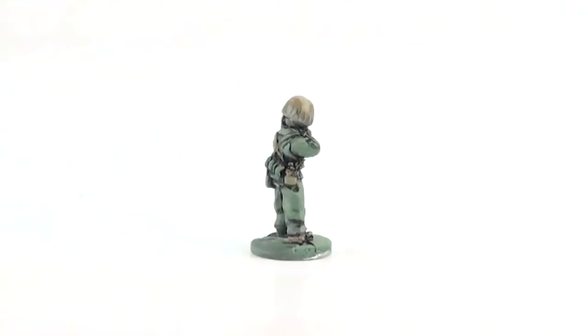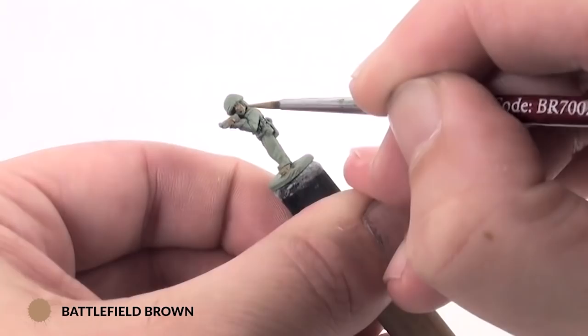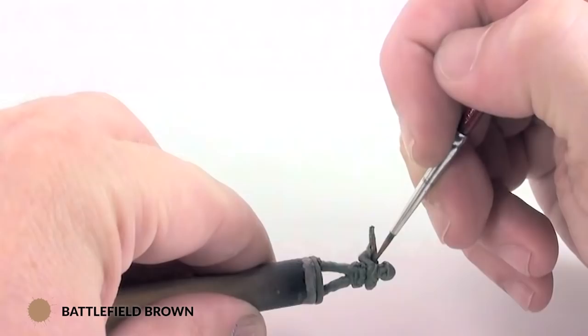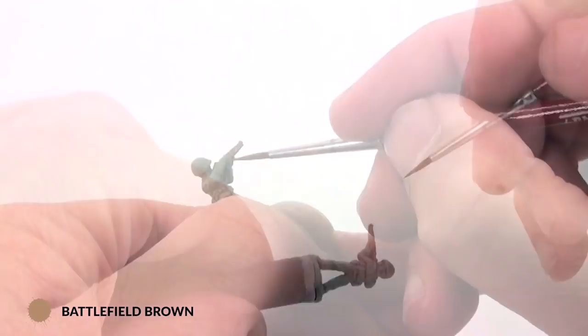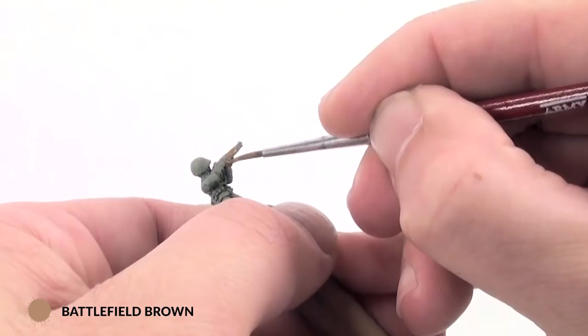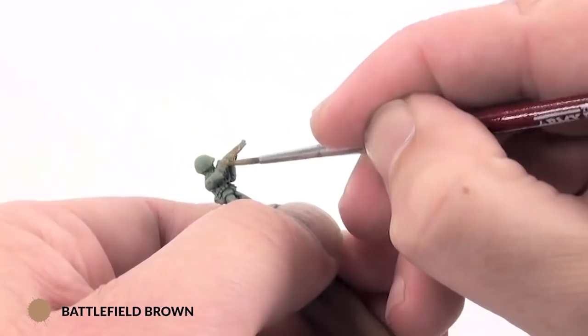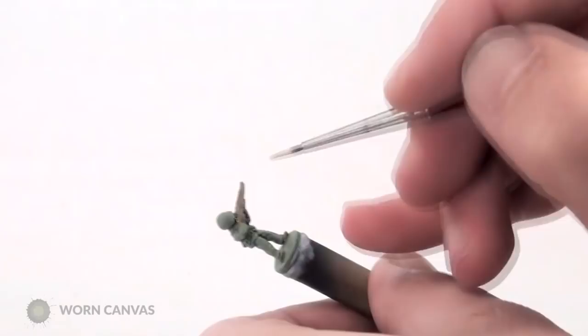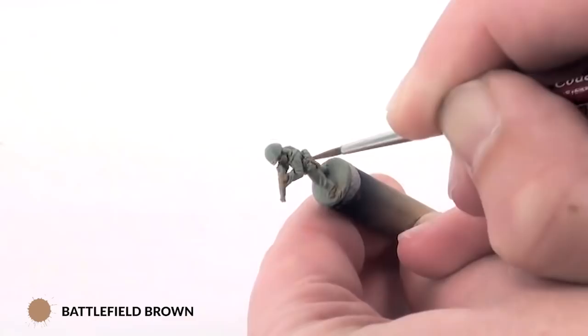So once I've got the base uniform color down, I then paint the exposed skin—the face, the hands, arms if they've got sleeves rolled up, as well as any wooden items such as the rifle stock and any leather items. You'll see this particular marine's got a scabbard on his left hand side to hold his K-Bar fighting knife. I paint all of those with battlefield brown.